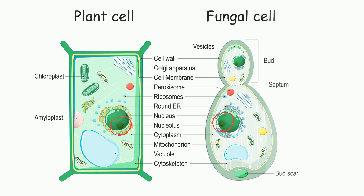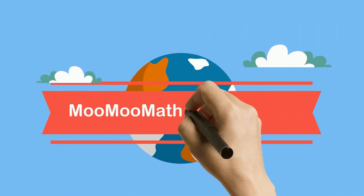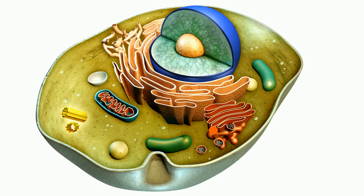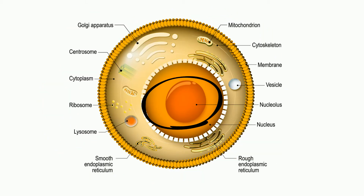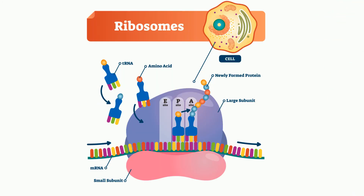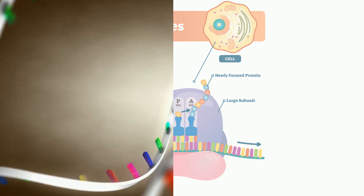Welcome to MooMooMath and Science and the function of the nucleolus. It has been described as the brain of the nucleus. This structure does not have a surrounding membrane and it is made up of proteins and ribonucleic acids, RNA. It makes up about 25% of the nucleus. Its main job is to rewrite ribosomal RNA and combine it with proteins, which results in an incomplete ribosome.